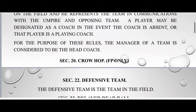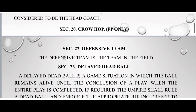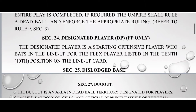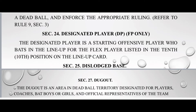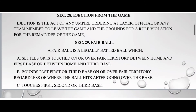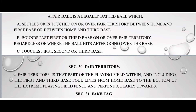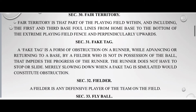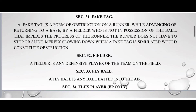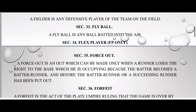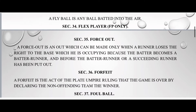Section 20: Crowhawk. Section 22: Defensive Team. Section 23: Heat Ball. Section 24: Designated Player. Section 25: Dislatch Base. Section 27: Dodge Out. Section 28: Ejection from the Game. Section 29: Fair Ball. Section 30: Fair Territory. Section 31: Fake Tag. Section 32: Fielder. Section 33: Fly Ball. Section 34: Flex Player. Section 35: Force Out. Section 36: Forfeit.